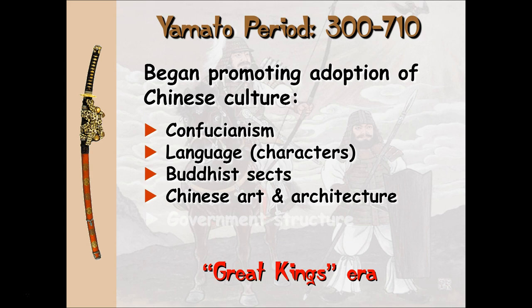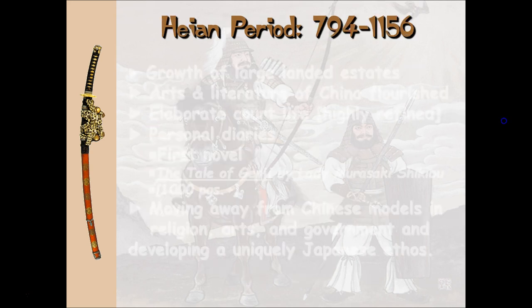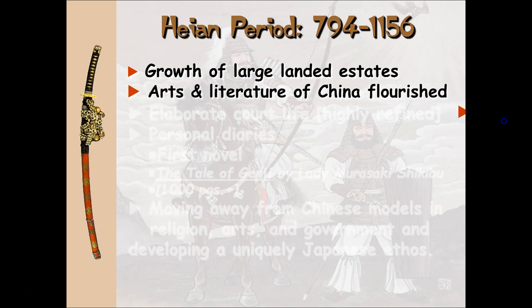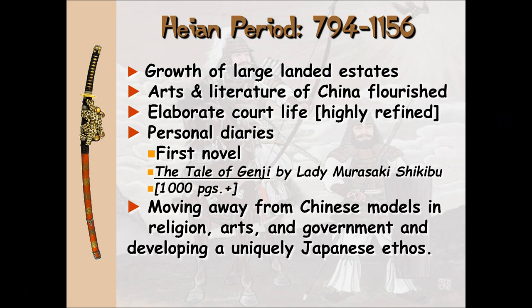That was a very long time ago. Then the second period, the Heian period, is where Japan started getting its own identity. It started to move away from these Chinese foundations — having its first novel and gradually finding its own voice. I liken it to United States history getting away from England. In the 1790s there was significant influence, but over time you develop your own style, your own culture, your own autonomy.